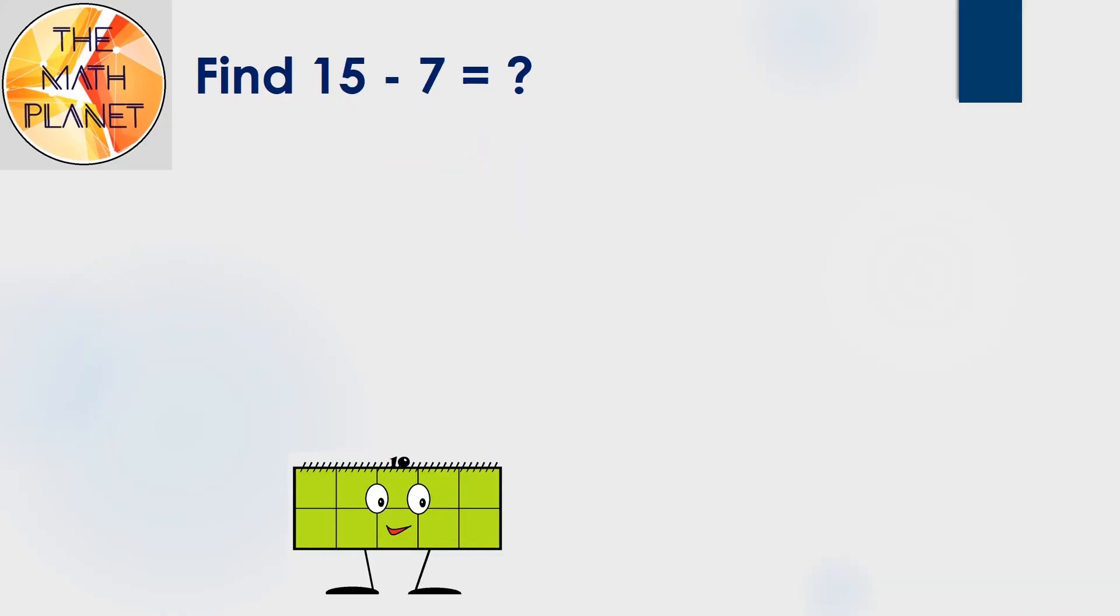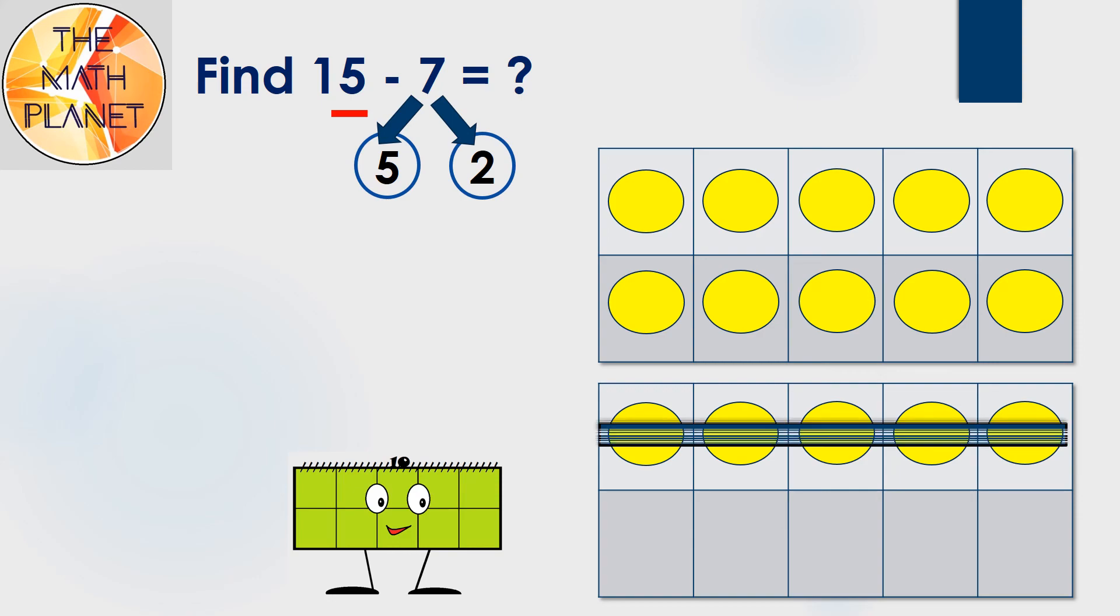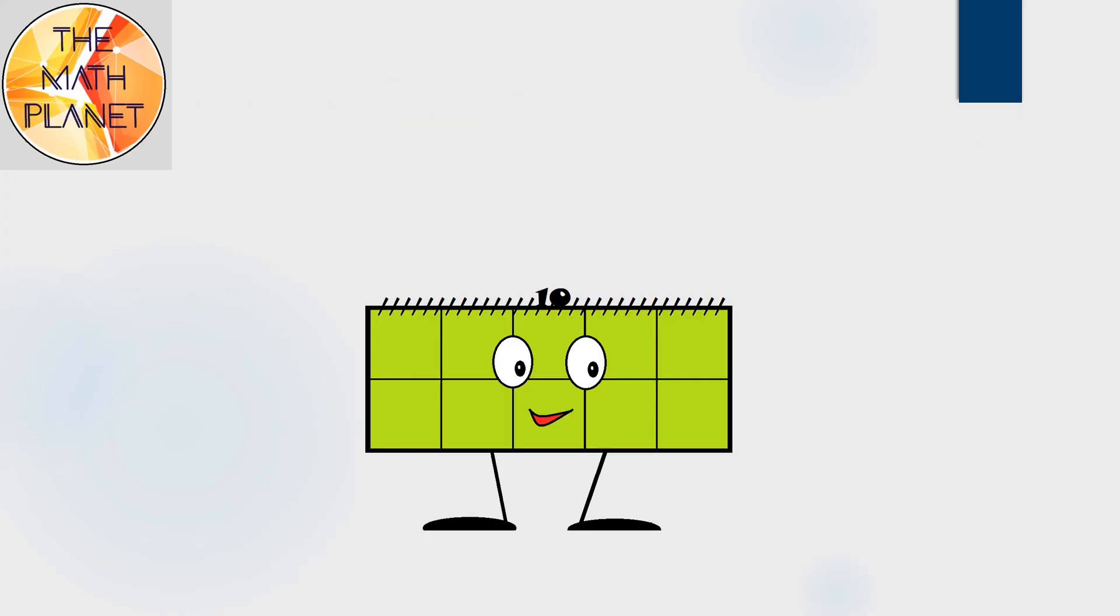Now, can you help me solve this last example? To find the difference between 15 and 7, first I will draw 15 using 10 frames. Next, I will split or break apart the 7 into 5 and 2. I'll subtract 5 to get 10, then I'll subtract 2 more to get the difference, which is 8.